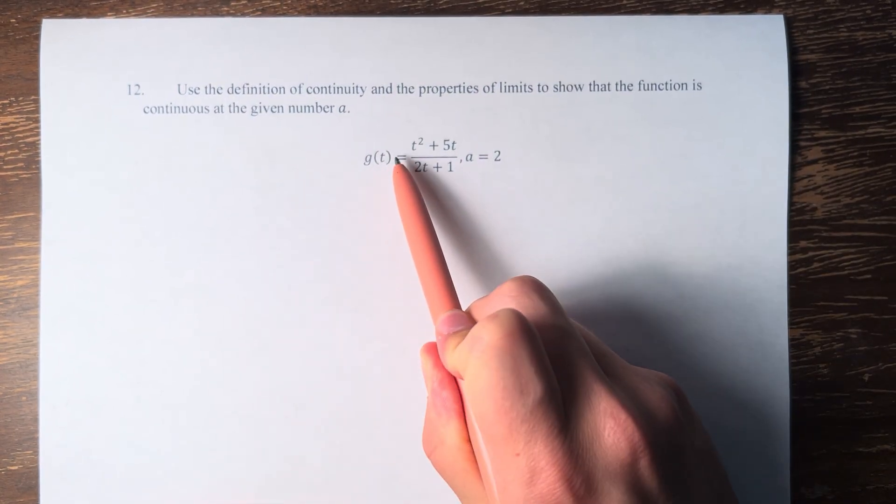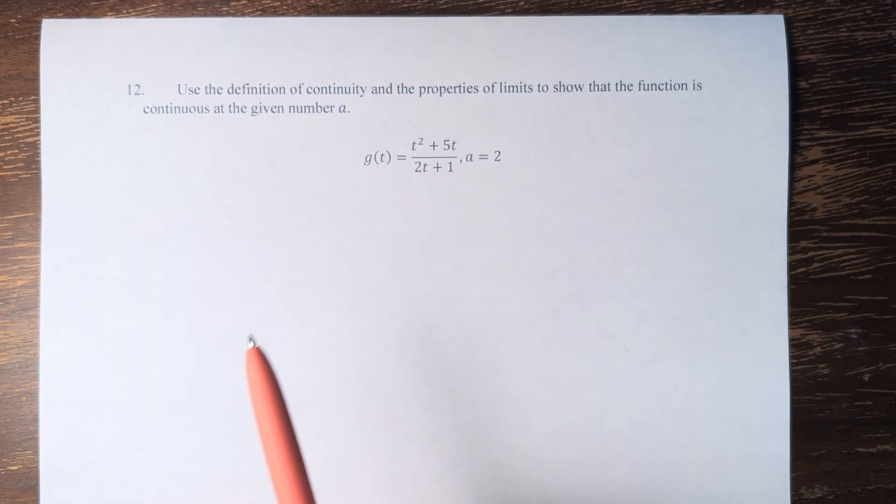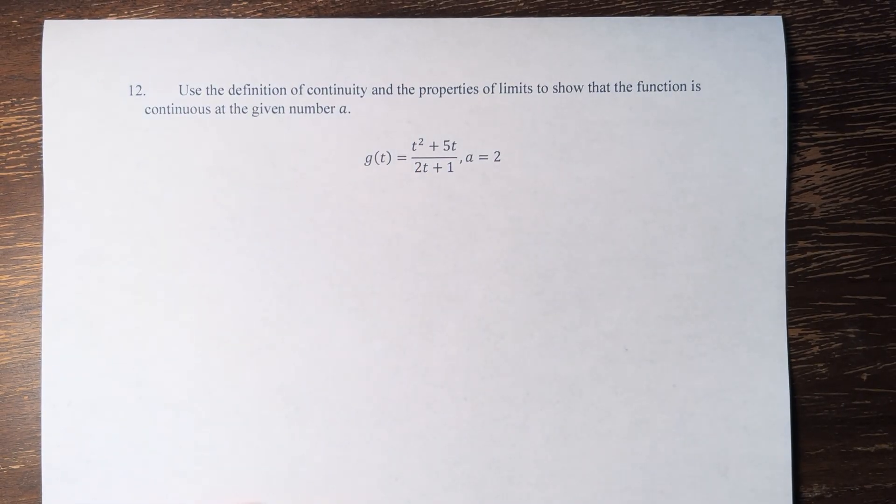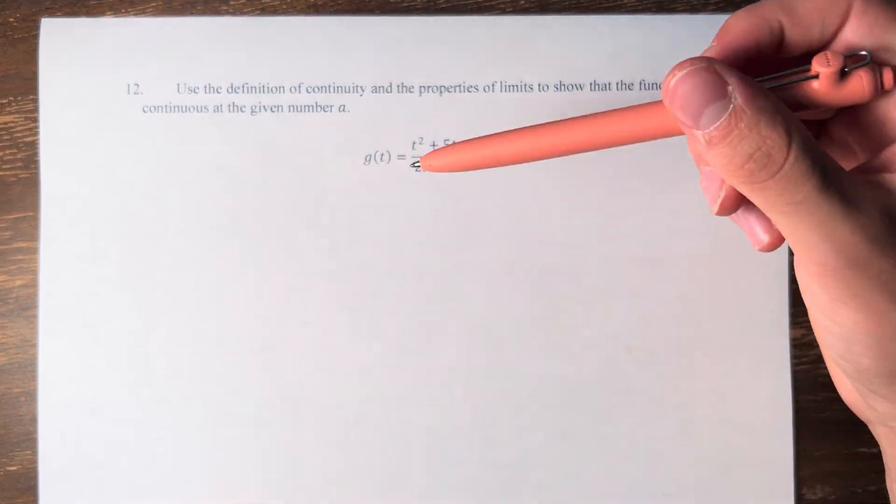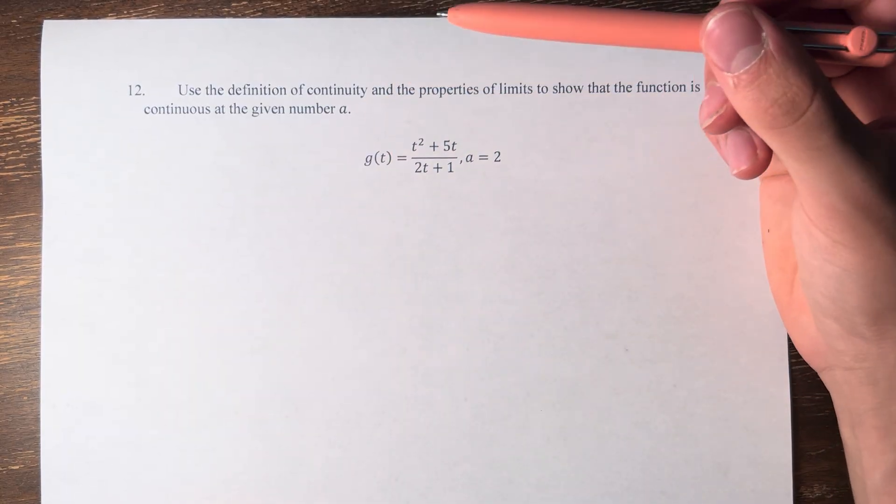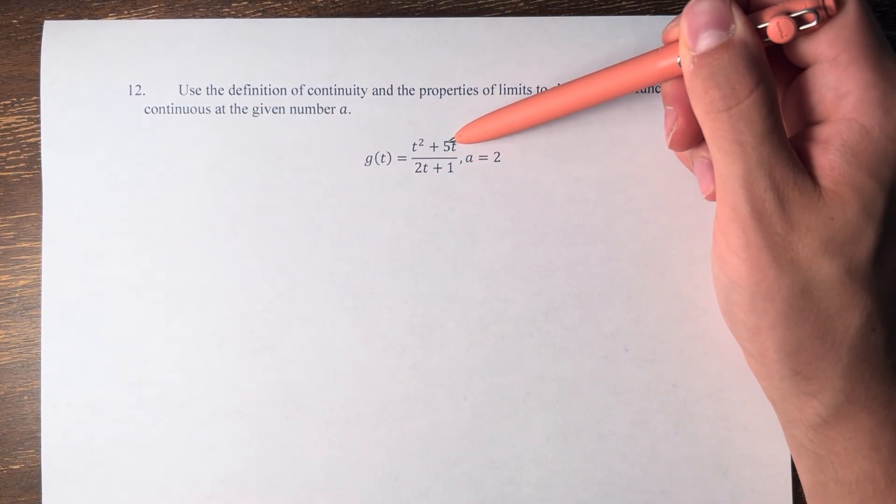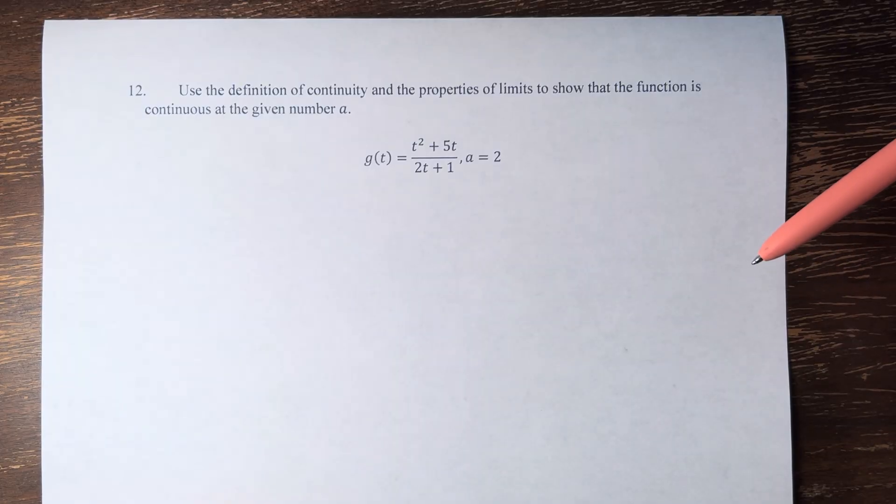So we have g of t is equal to t squared plus 5t divided by 2t plus 1. So g of t is a rational function. It is a polynomial, t squared plus 5t, divided by another polynomial, 2t plus 1.